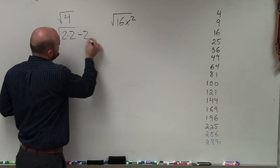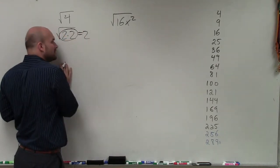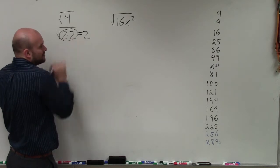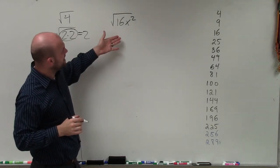So therefore, we understood that the answer was 2. Any time we have a pair of two numbers, we can pull them out of the square root and take that as the square root of that value.